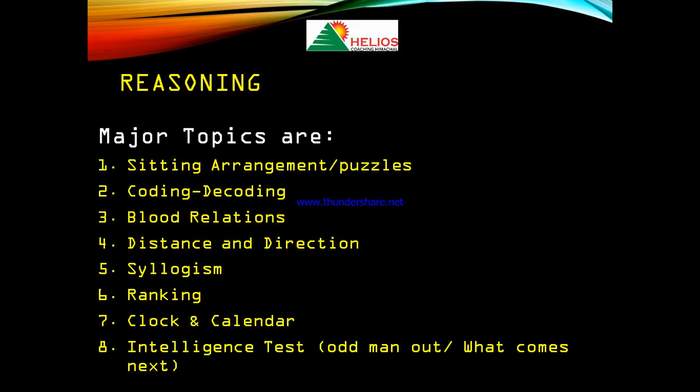The scoring topics in reasoning are: sitting arrangement, coding-decoding, blood relations, distance and directions, and clocks and calendars. These topics are very basic. If you use a little effort and shortcuts, you can solve the paper very easily and qualify. I am stressing again — reasoning is your most scoring section.